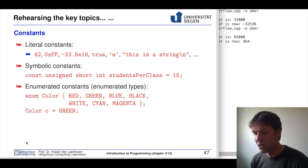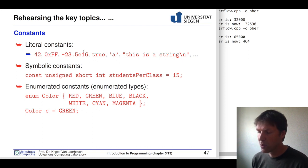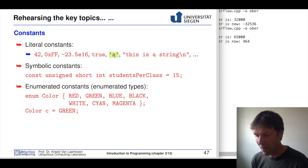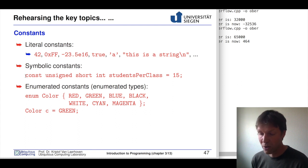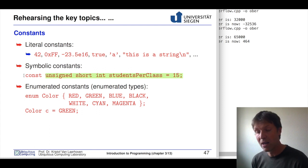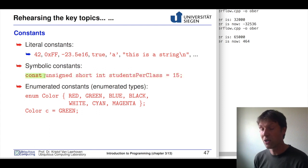Constants are variables you cannot change once set. There are several literal constants you can use — what we'll most commonly use are strings, single characters, true and false for booleans, and numbers. When using a named constant in your program, add the const keyword in front of the normal variable initialization to ensure it cannot be changed and is treated as a constant.